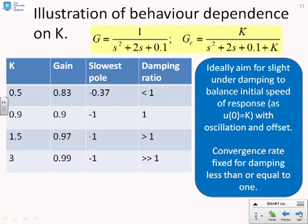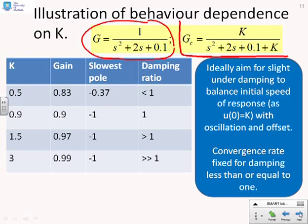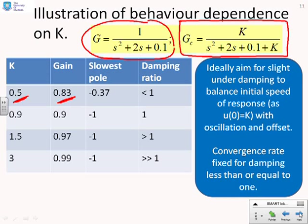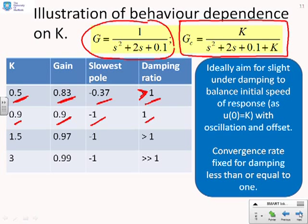As an illustration, consider the system G equals 1 over s squared plus 2s plus 0.1. Adding the proportional compensator, the closed-loop transfer function is G_c equals k over s squared plus 2s plus 0.1 plus k. The table shows how poles, damping, and closed-loop gain vary with k. At k equals 0.5, the closed-loop steady-state gain is 0.83 with an offset, the slowest pole is at minus 0.37, and the system is overdamped. At k equals 0.9, the steady-state gain is 0.9, the slowest pole is minus 1, and the damping ratio is 1 — critical damping.